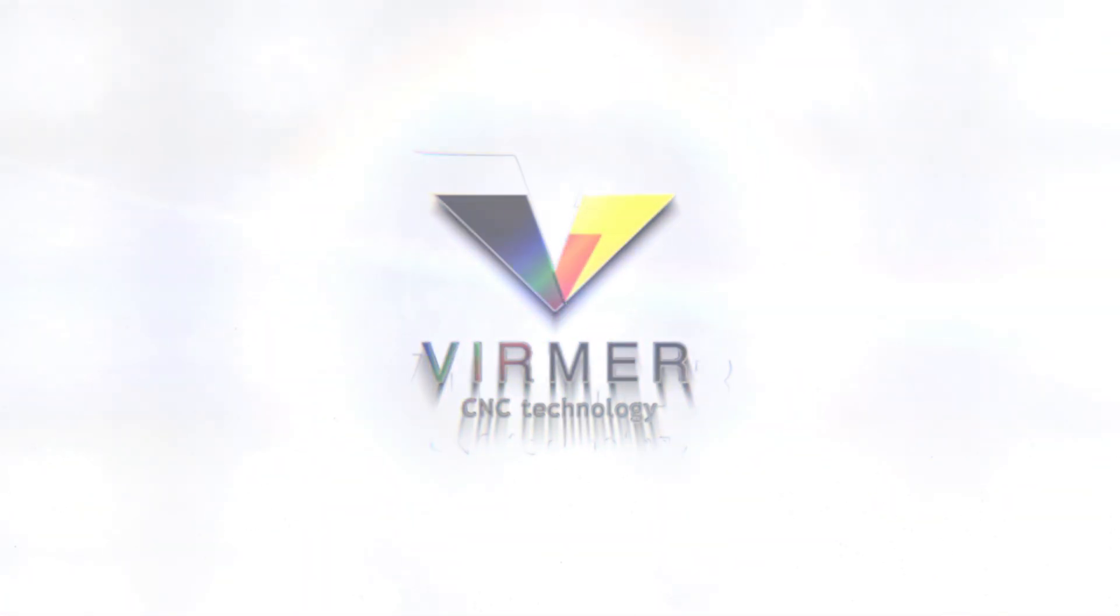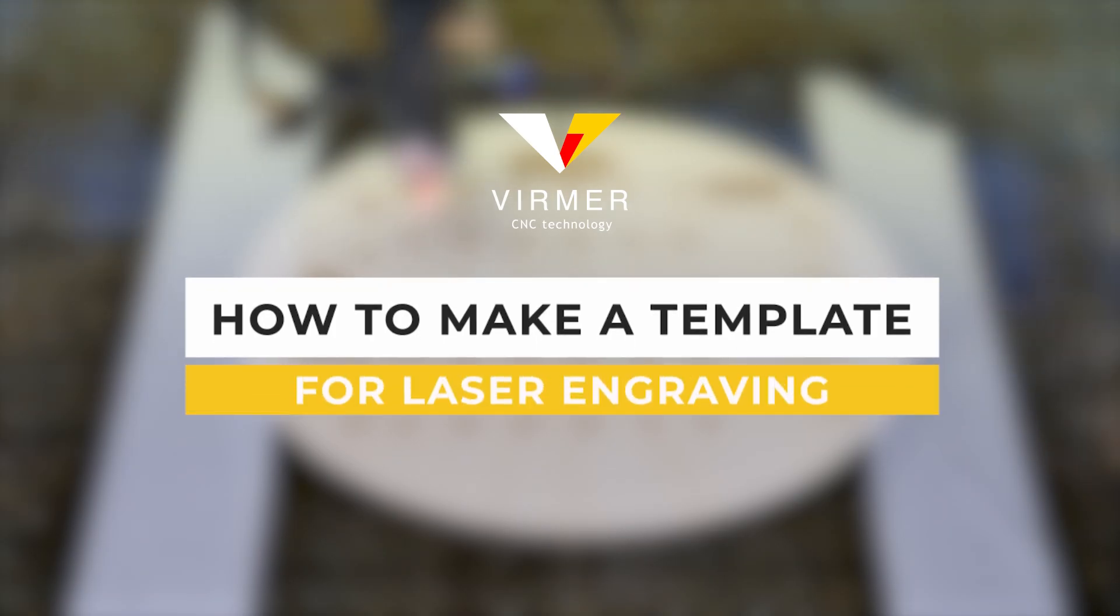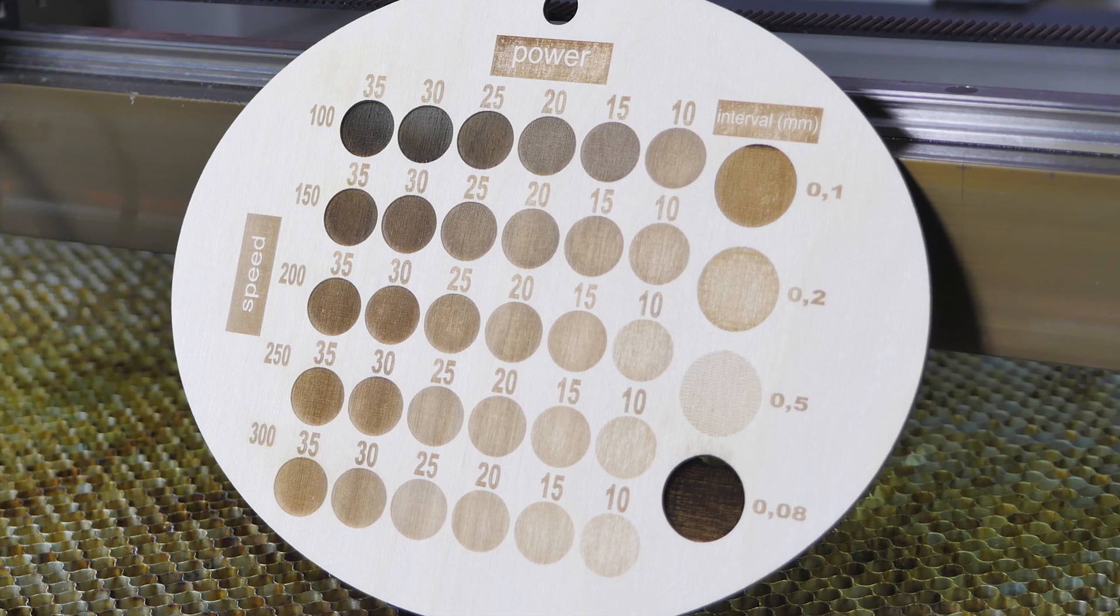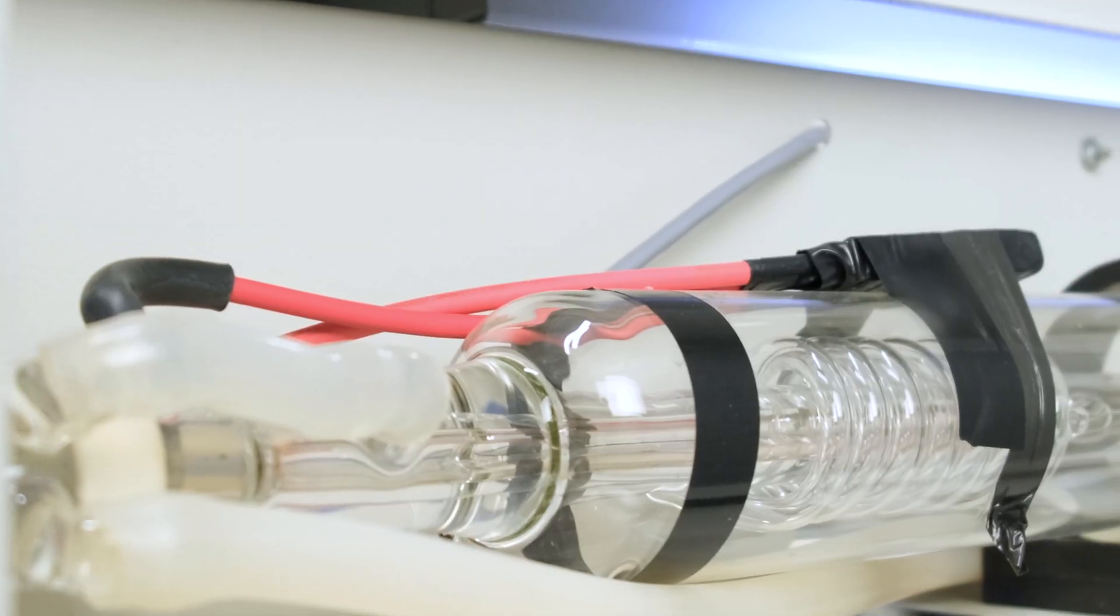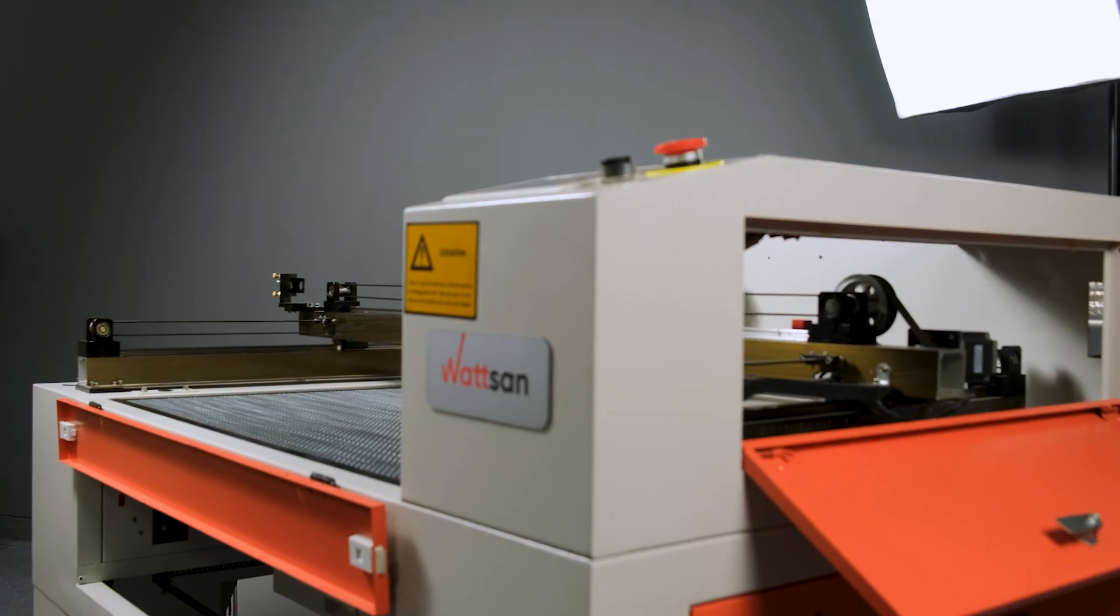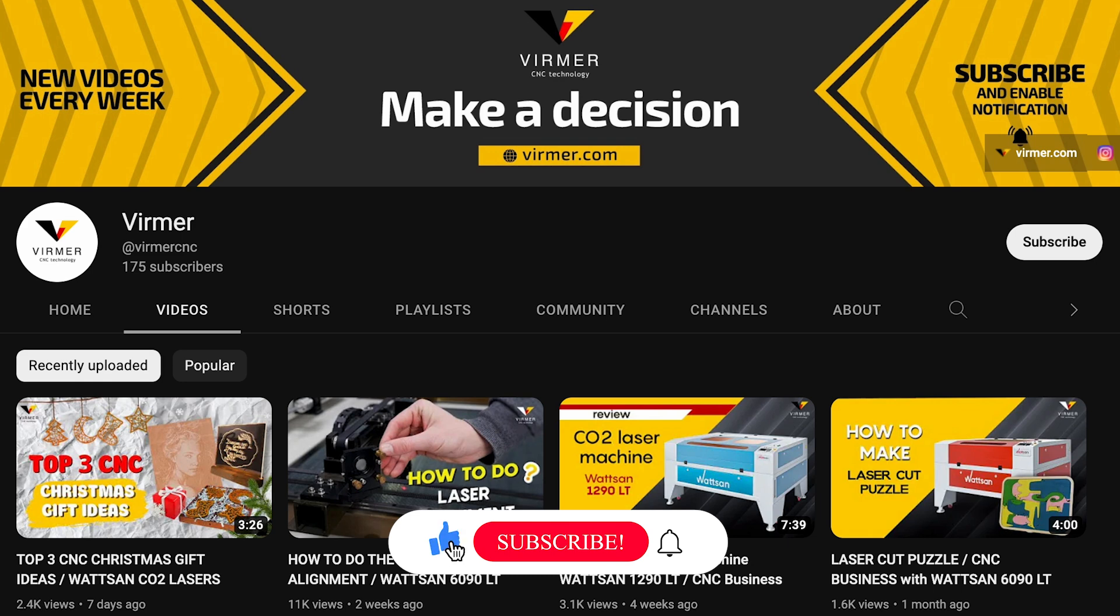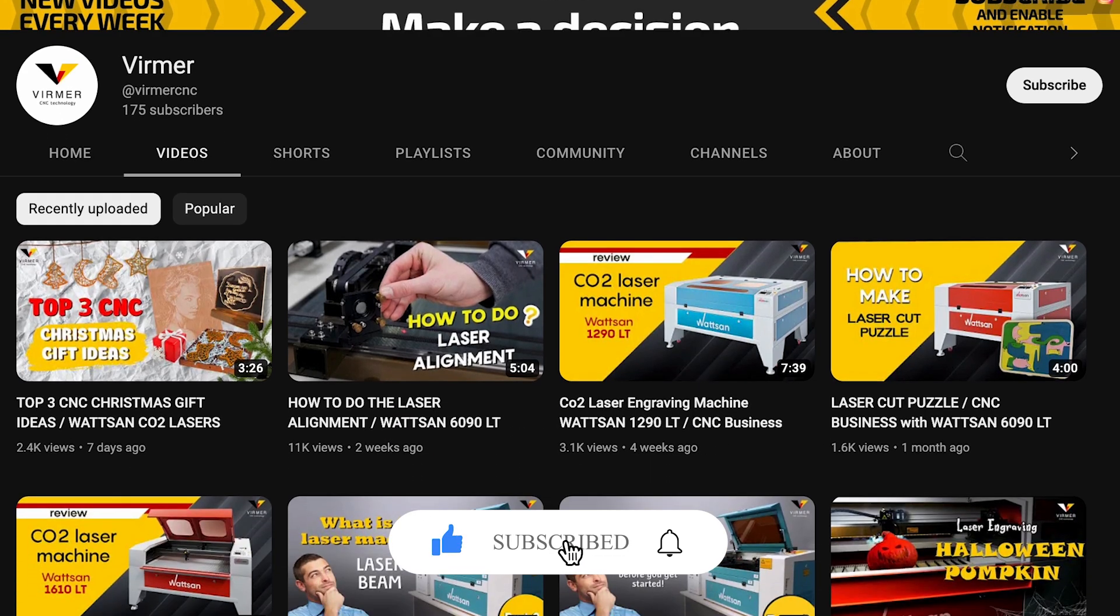Hello everyone, this is Wattson. In this video we will show you how to make a template to quickly start processing plywood. Also we will show you the result of the ratio of laser beam speed and laser tube power when engraving on a CO2 laser machine. There is a lot of informative and interesting content ahead, so subscribe to our channel.